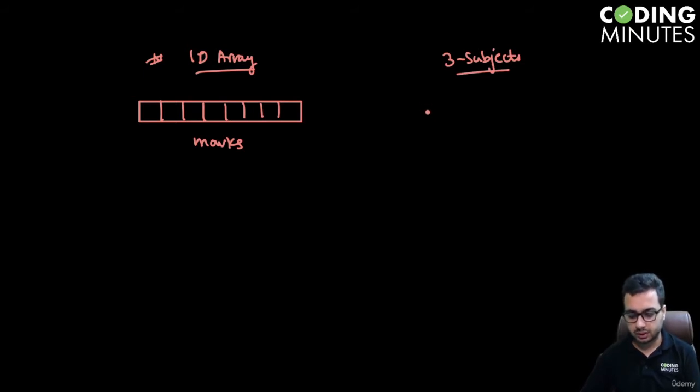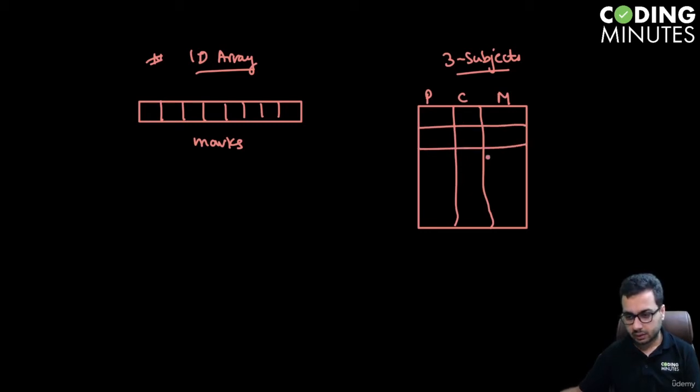You can make a 2D array which has N number of rows and three columns. The first column denotes the marks for physics, next for chemistry, and the third for mathematics. So student S1 scored 10, 15, and 18 marks, student S2 scored 11, 13, and 22 marks, and so on.